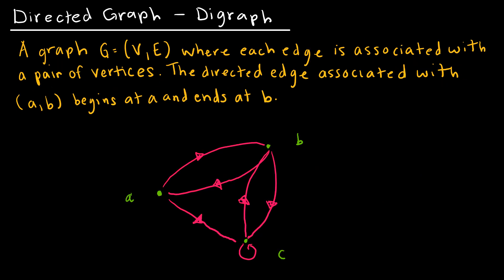We've already spoken a little bit about digraphs, or directed graphs, and this is just a graph where each edge is associated with a pair of vertices. The directed edge associated with (a,b) begins at a and ends at b. So if we were to list the vertices included in this directed graph, we would have A-B, because A goes to B, and I would also have A-C, because A goes to C.